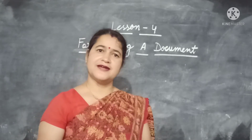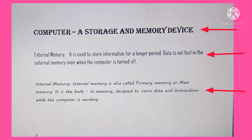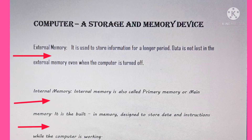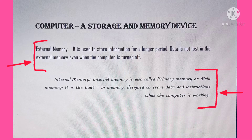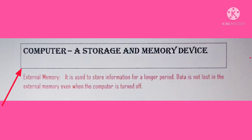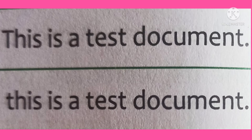We can make our document attractive by changing font and its size, by highlighting certain words, by adjusting line spacing, by aligning text on a page, by creating bulleted and numbered lists, by applying border, by changing text styles and color, by changing text case, and by setting margins and tabs. We can format our text using the Home tab.